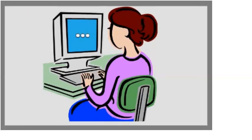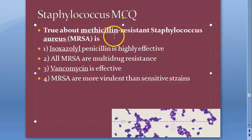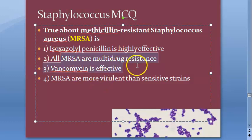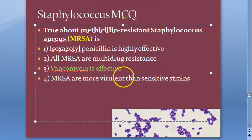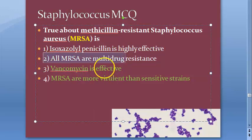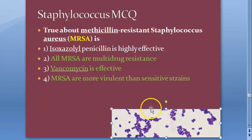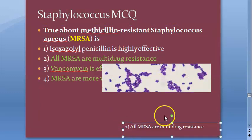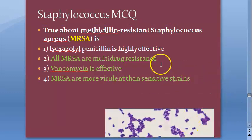We are continuing with the MCQs for staphylococcus. True about methicillin-resistant staphylococcus aureus: isoxazolyl penicillin is highly effective; all MRSAs are multidrug resistant; vancomycin is effective; MRSAs are more virulent than sensitive strains. Vancomycin is effective — that seems correct. But the stated answer is option 2: all MRSAs are multidrug resistant.